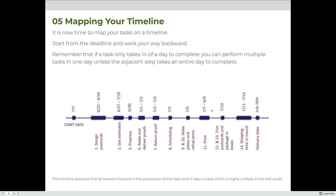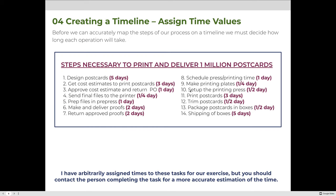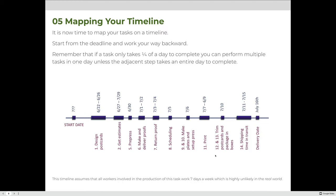Scheduling takes an entire day — July 5th. Making and delivering proofs takes two days each, so proofs are July 3rd and 4th, and delivering them back is July 1st and 2nd. Pre-press was one full day — June 30th. Sending the final files takes a quarter day. Getting cost estimates takes three days — June 27th, 28th, and 29th.